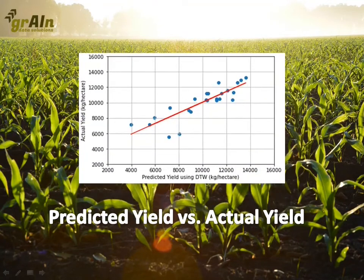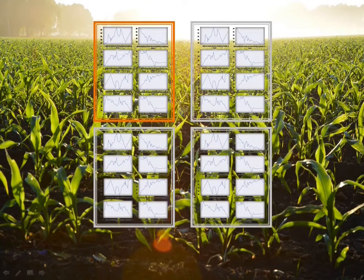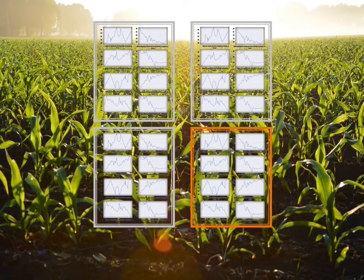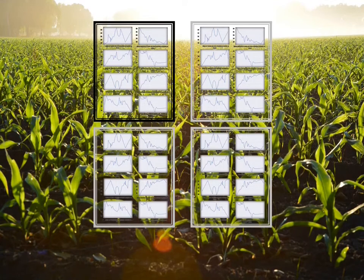For most farming experiments in this case study, DTW predicted the yield of corn with an error less than 10%. It shows that historical condition of plants is a good indicator of their future outputs. If we can find a farming season that is most similar to this season mathematically, then the yield should be similar too, and we can predict it with an accuracy much better than using average.